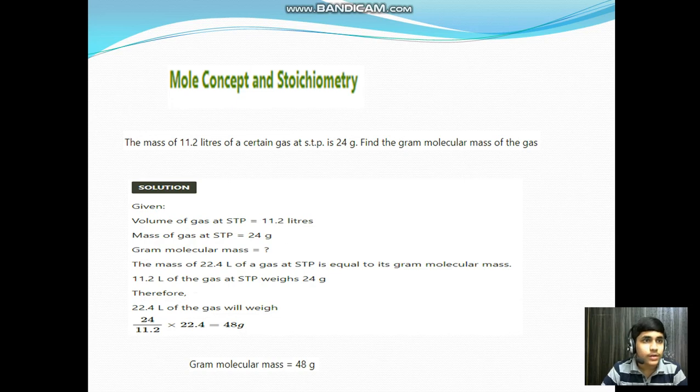Chapter: Mole Concept and Stoichiometry. The mass of 11.2 liters of a certain gas at STP is 24 grams. Find the gram molecular mass of the gas. Solution: Given values from the question - Volume of the gas at STP is 11.2 liters, Mass of the gas at STP is 24 grams.